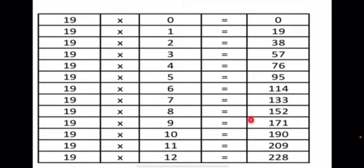19 sevens are 133. 19 eights are 152. 19 nines are 171. 19 tens are 190. 19 elevens are 209. 19 twelves are 228.